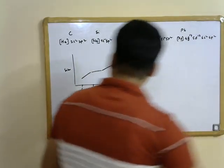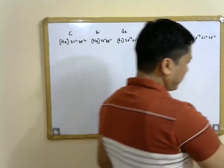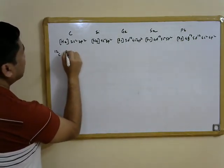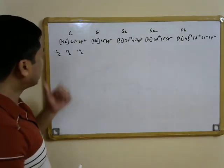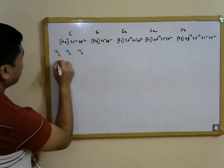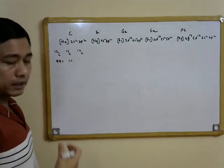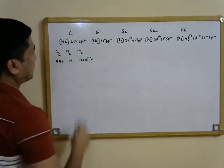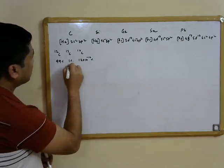Now let us look at the isotopes available for these elements. Carbon has three naturally occurring isotopes: ¹²C, ¹³C, and the radioactive ¹⁴C. The natural abundance of ¹²C is around 99%, ¹³C around 1%, and ¹⁴C is approximately 1.2 × 10⁻¹⁰ percent — extremely small.